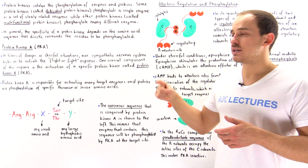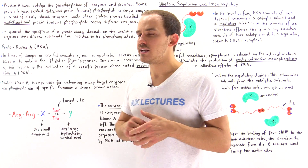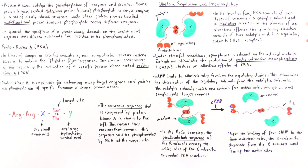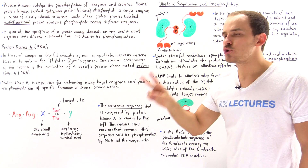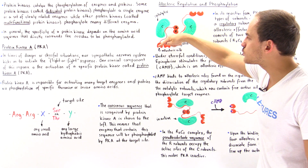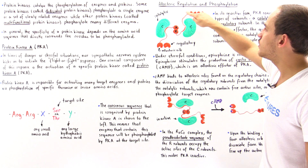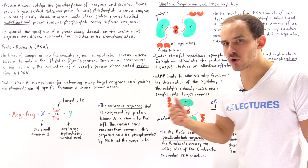The catalytic subunit contains the active site, while the regulatory subunit contains the allosteric site that binds onto cyclic AMP. In the absence of cyclic adenosine monophosphate, the quaternary structure consists of two catalytic subunits, shown in green, and two regulatory subunits, shown in light brown. We represent the inactive form of PKA as the R2C2 complex — two regulatory subunits and two catalytic subunits.